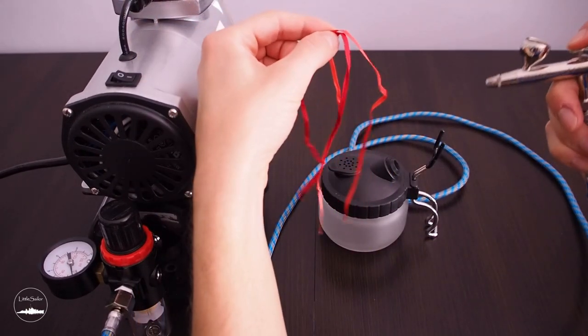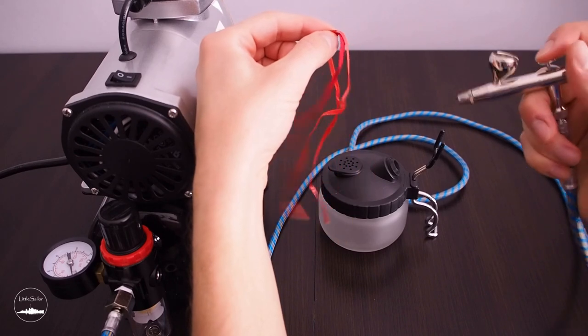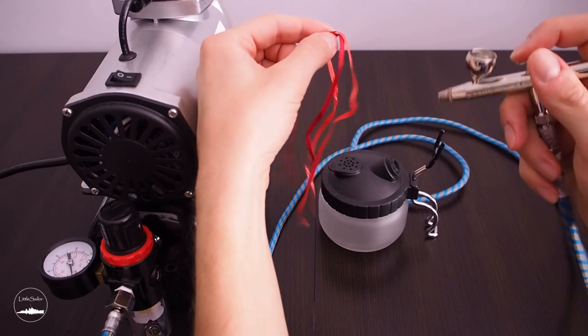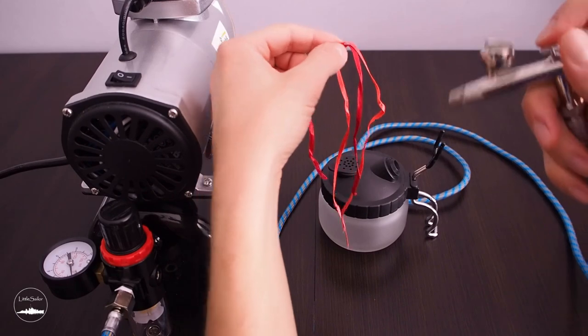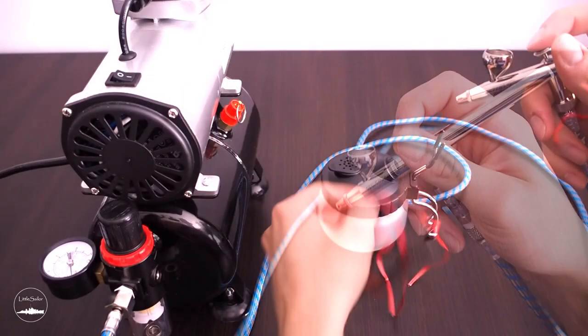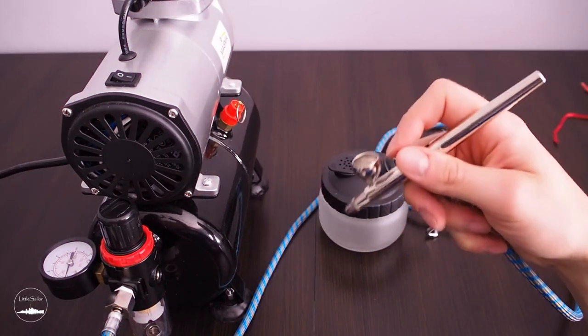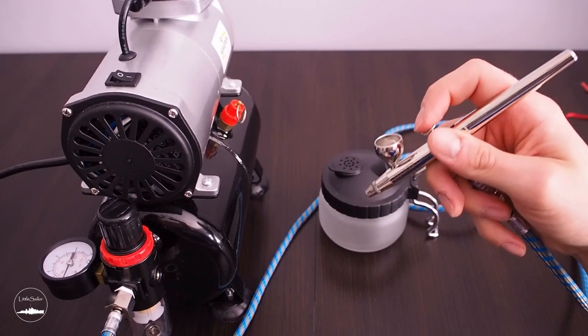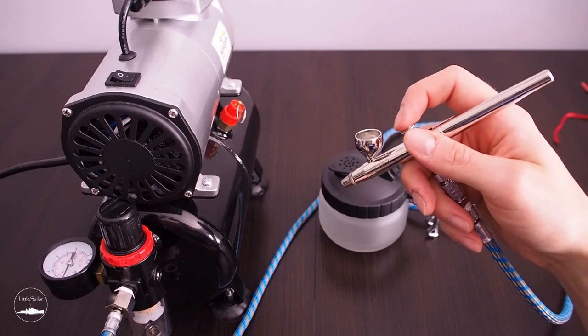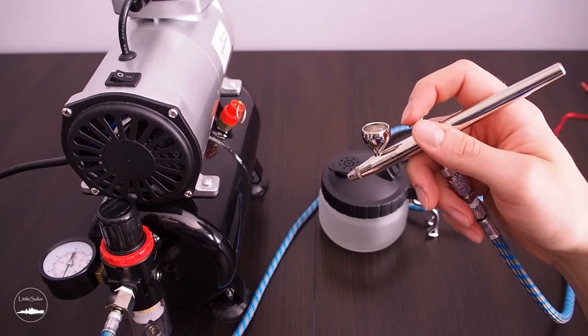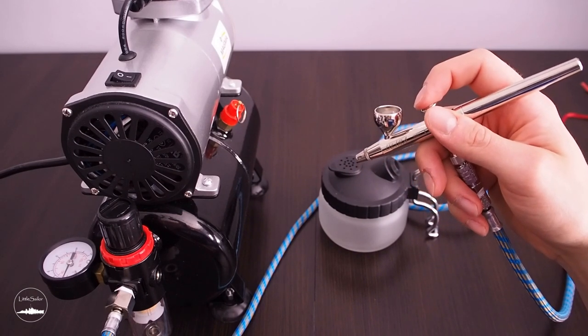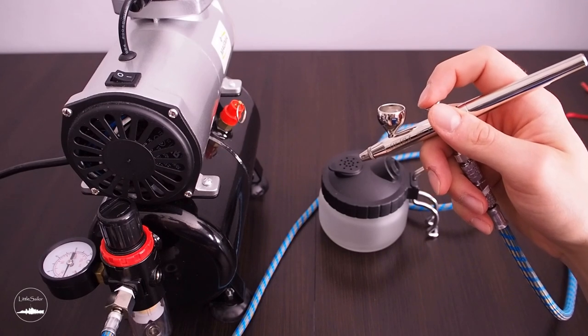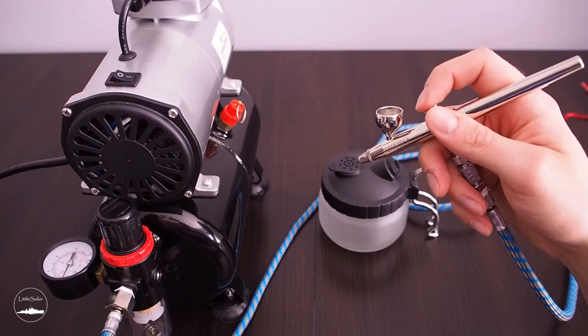The manufacturer is writing that the compressor is designed for up to 30 minutes of continuous operation but taking care of its long life I suggest taking breaks more often trying not to overheat the device. Painting the scale model elements usually doesn't take that long so this situation will not happen often. When the pressure drops to about 2-2.5 atm the switch starts the engine and it works again until reaching 4 atmosphere.